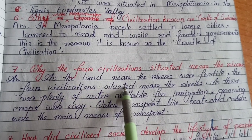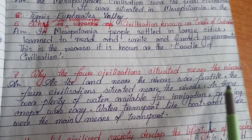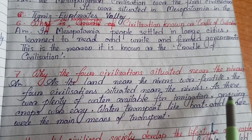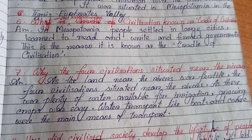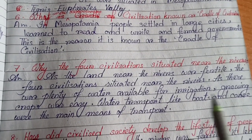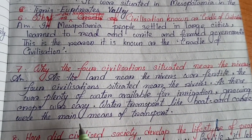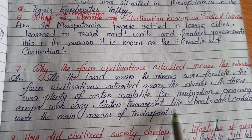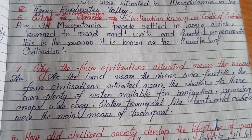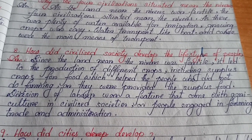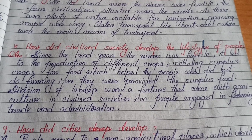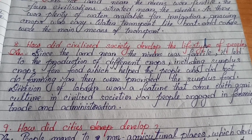Number seven: Why were the four civilizations situated near the rivers? As the land near the rivers was fertile, there was plenty of water available for irrigation, making growing crops easy. Water transport like boats and canoes were the main means of transport.